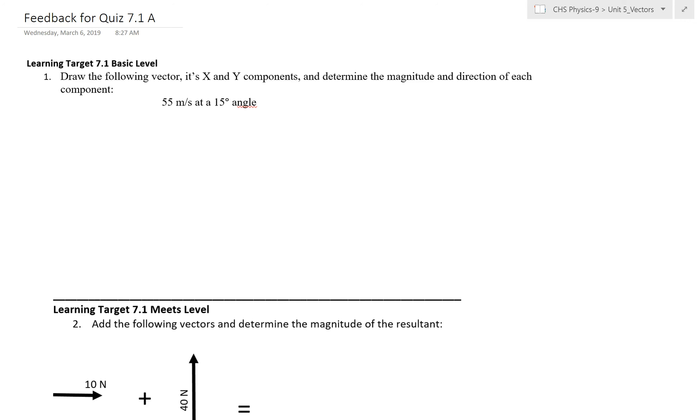Hello everybody, and this is feedback for quiz 7.1 form A. Look in the top right-hand corner of your quiz, and if it says A you're good to go. If it says B, turn back and go do a different video. So basic level is going to be worth 7.5 points in the end, just be aware of that.